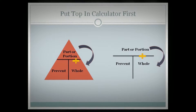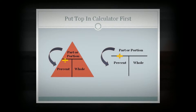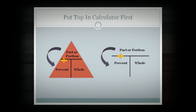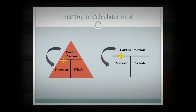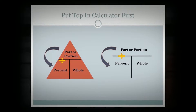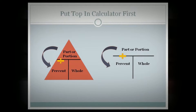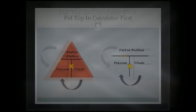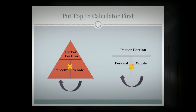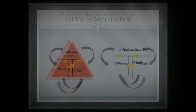If you have the part or the portion and you have the percentage, you'll divide that percentage by the part or the portion and that will give you the whole. If you have the percentage and you have the whole, you multiply the two to get the part or the portion.